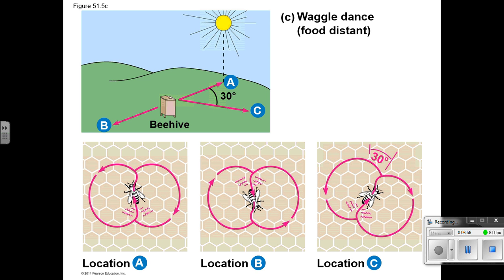Bees do something called a waggle dance. They perform this when food is distant, doing a little dance that indicates the direction and angle so that others can find the same food source. There's actually a Magic School Bus episode on bees — they get into the idea that this is how bees communicate through movement to alert others.